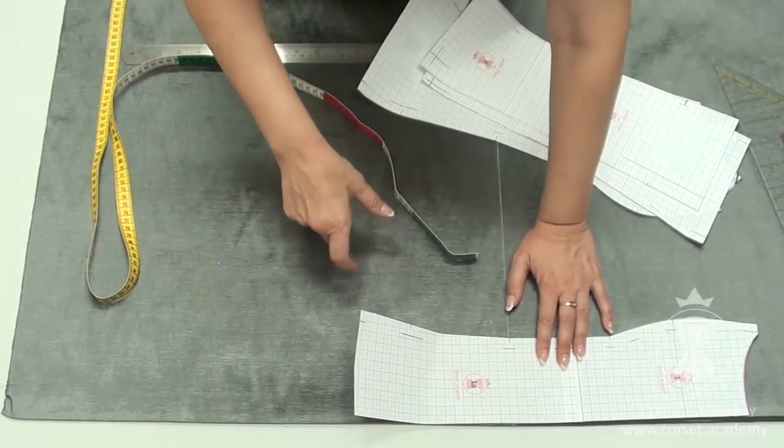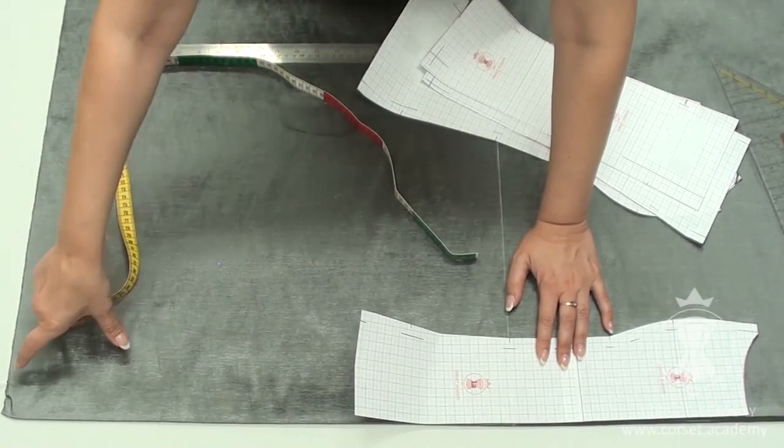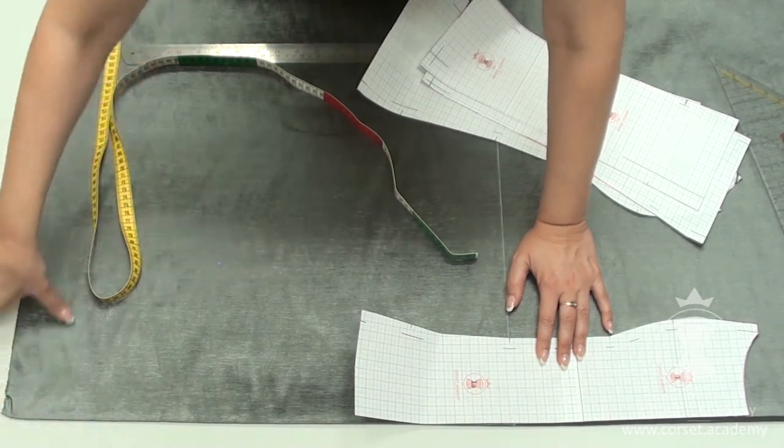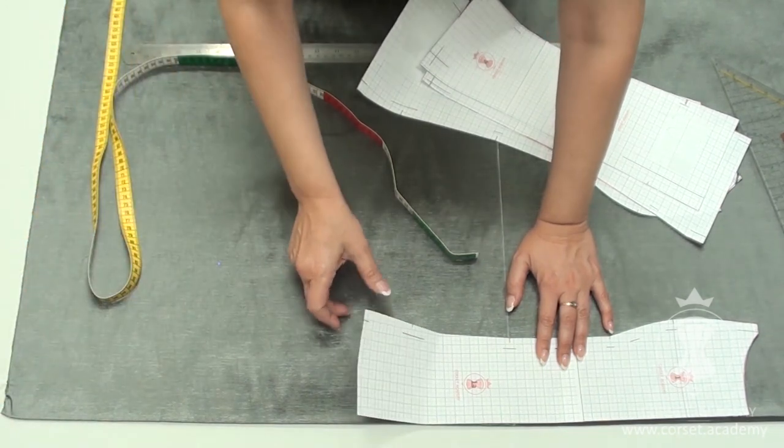The skirt is supposed to be 60 centimeters long when finished, so the bottom stripe should surpass the edge of the base by at least 4 centimeters.